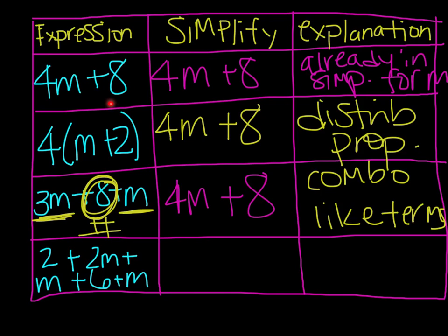So 4m plus 8 is equivalent to 4 times the quantity m plus 2, which is also equivalent to 3m plus 8 plus m. Remember, the equal sign means we have balance here.